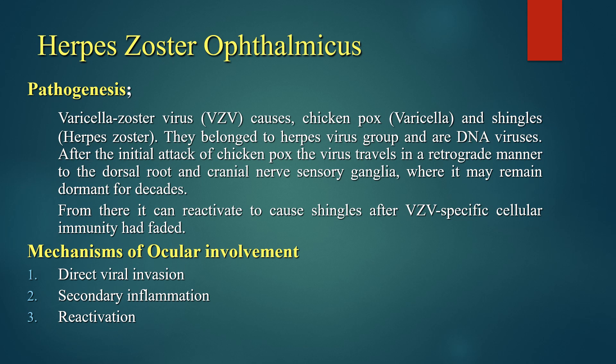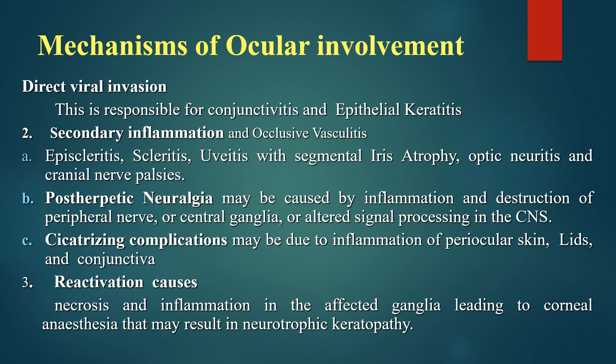From there it can reactivate to cause shingles after varicella zoster virus-specific cellular immunity has faded. The mechanisms of ocular involvement are by direct viral invasion, secondary inflammation, or reactivation. Direct viral invasion is responsible for conjunctivitis and epithelial keratitis. Secondary inflammation, which can result in occlusive vasculitis, can present as episcleritis, scleritis, uveitis with segmental iris atrophy, optic neuritis, and cranial nerve palsies. Post-herpetic neuralgia may be caused by inflammation and destruction of peripheral nerve or central ganglia, or altered signal processing in the central nervous system.